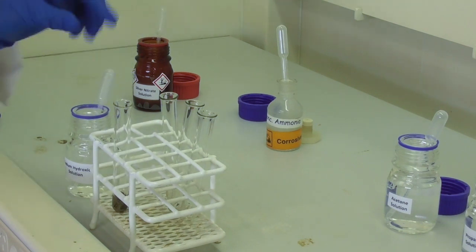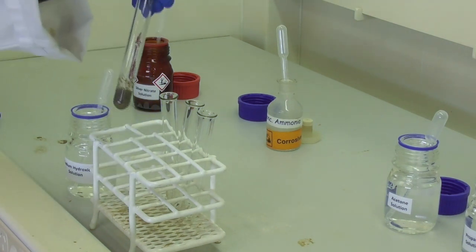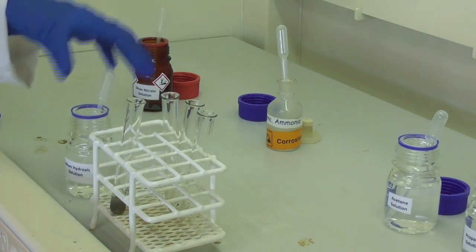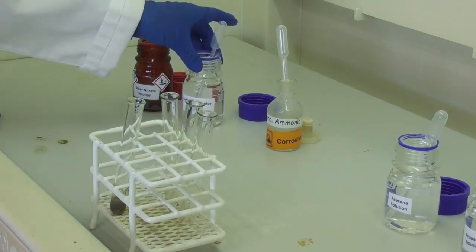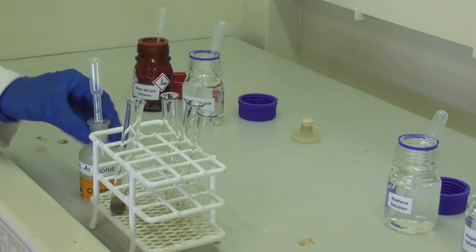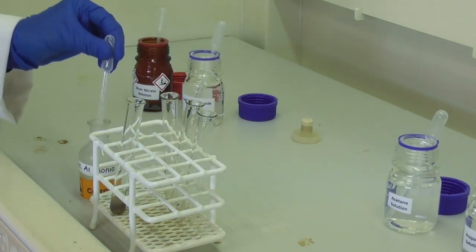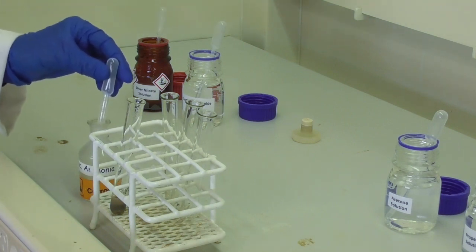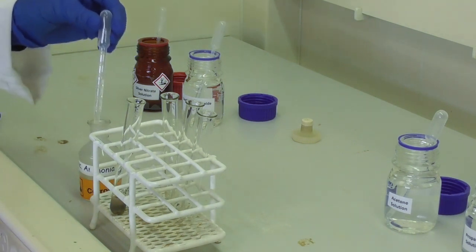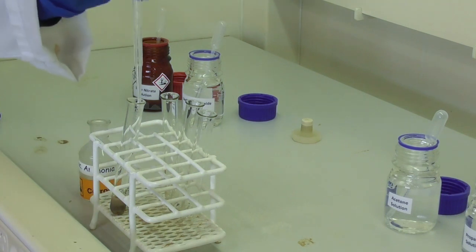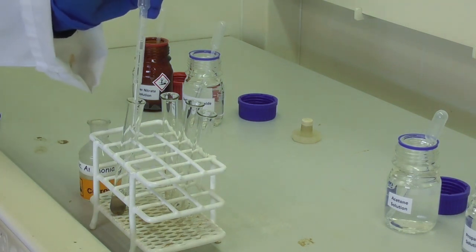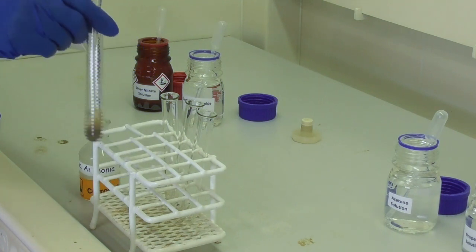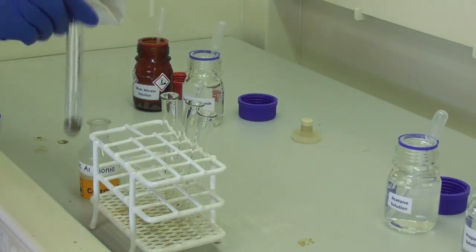This results in a dark precipitate. The third reagent in the preparation of the tolerance reagent is ammonia solution. We add between one and two milliliters of ammonia into our test tube and shake it really well.